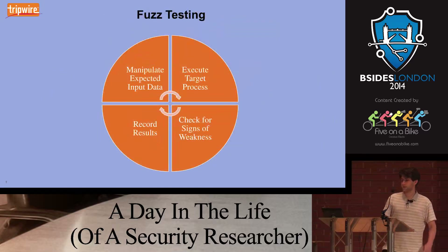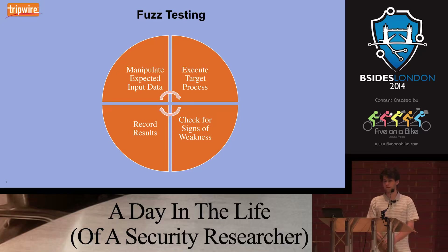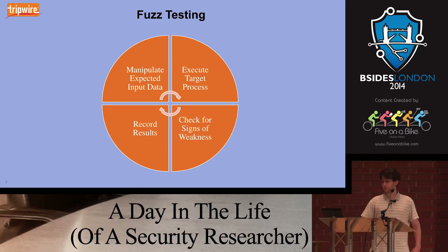Starting out by talking about fuzz testing — everybody should more or less be aware of this. The general idea is that you're going to take some input that is expected for an application, manipulate that input so that it is not well-formed anymore, execute your target process, and look to see if it crashed or did something else unexpected. Any of those results get recorded, and then you go back into your loop of manipulating the input and running your process. At the end of the day, you hopefully have a nice list of crash dumps which you can review for exploitability.